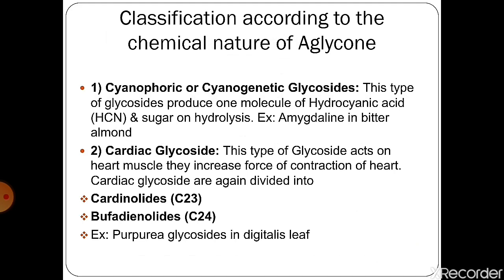The first category is cyanophoric or cyanogenetic glycosides. This type of glycoside produces one molecule of hydrocyanic acid and a sugar on hydrolysis. For example, amygdalin in bitter almond.